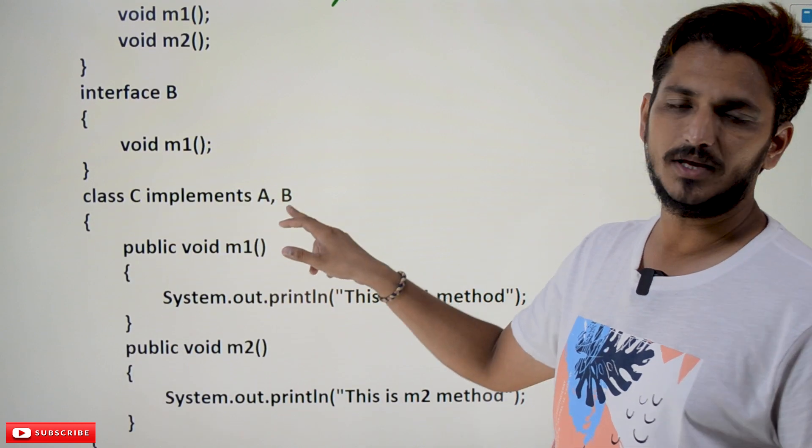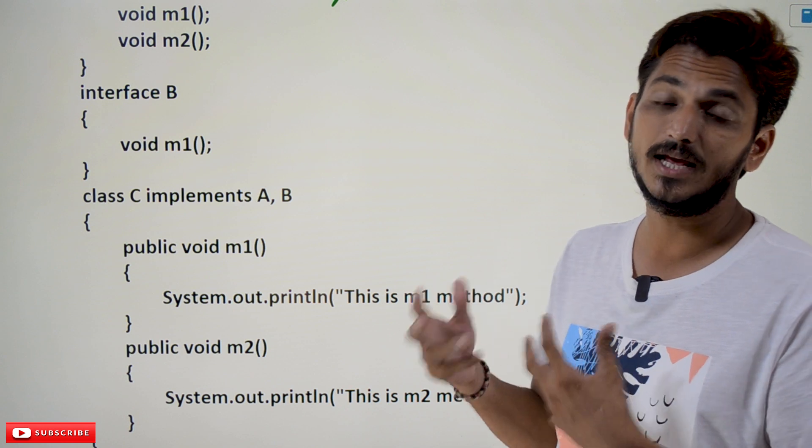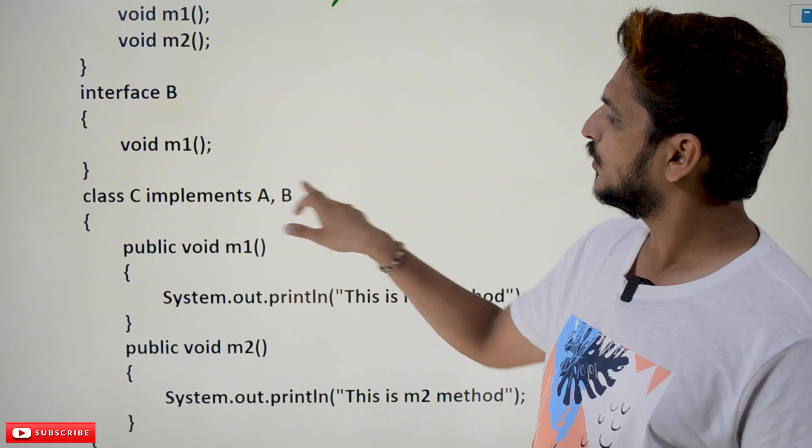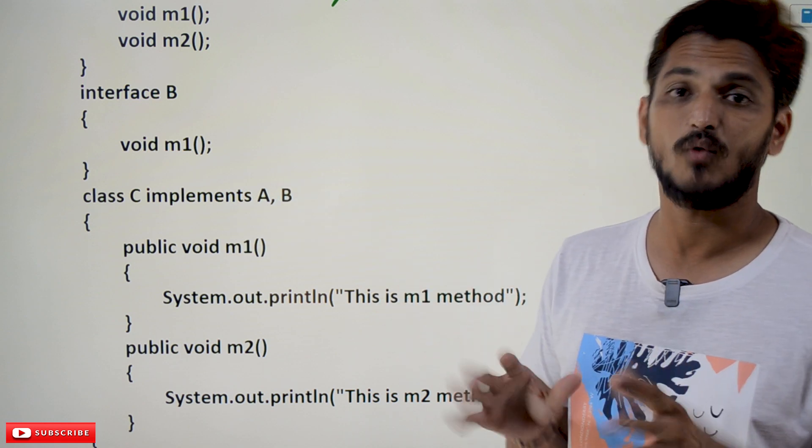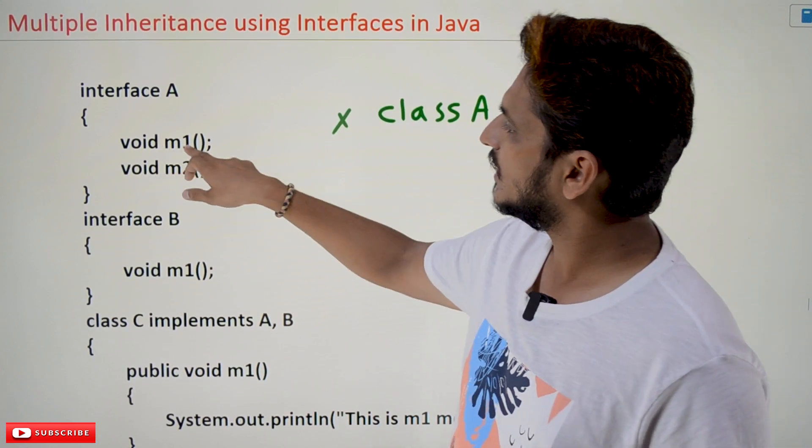Class C implements A, B. Yes, C can implement both A and B - this is multiple inheritance using interfaces. It inherits two interfaces at a time. This is allowed.